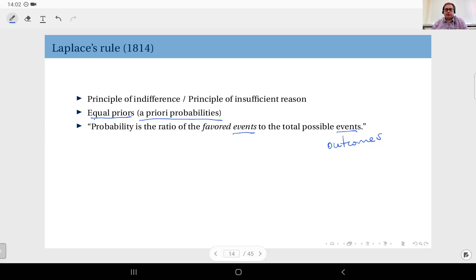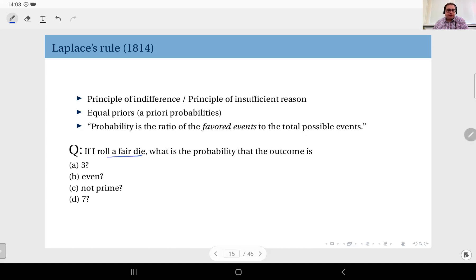Okay, so basically this is Laplace's rule. Now based on this approach, we can consider this simple question: if I roll a fair die, what is the probability that the outcome is 3? Now obviously, using a fair die—it even says fair die and we don't even have to assume that, it's given in the question.